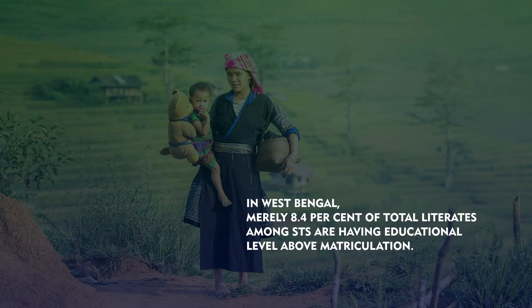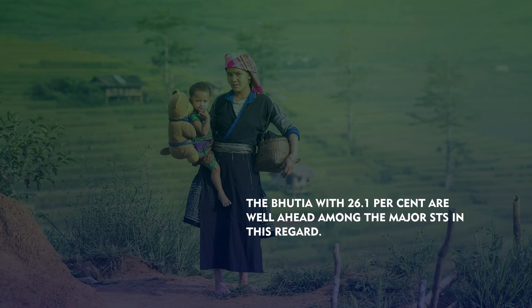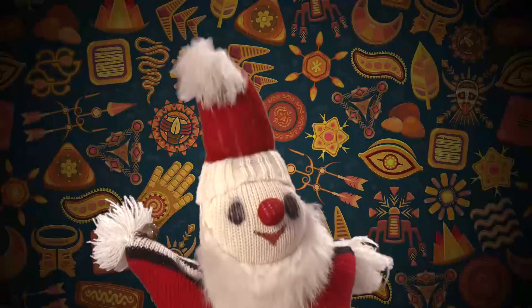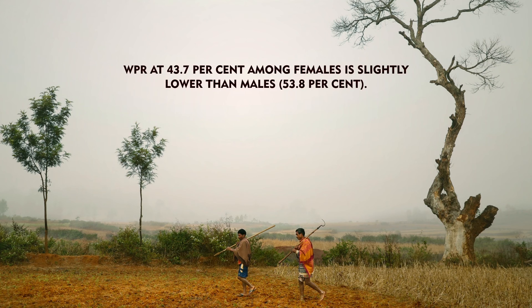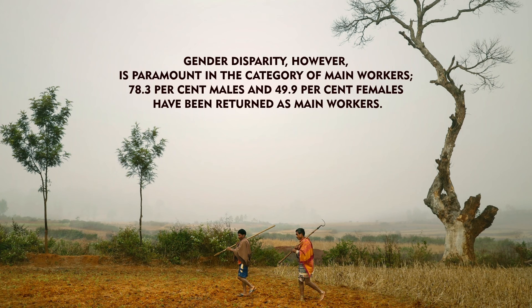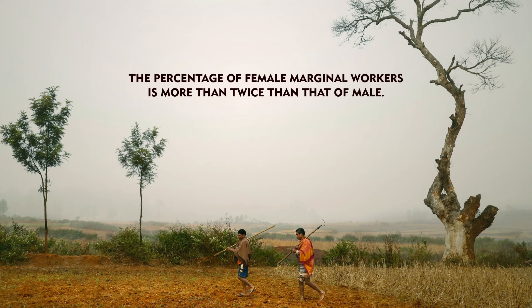In West Bengal, merely 8.4 percent of total literates among STs are having educational level above matriculation. The Bhutia with 26.1 percent are well ahead among the major STs in this regard. Work participation rate: In the 2011 census, 47.4 percent of the ST population has been recorded as workers, which is close to the aggregated national average of STs 53.9 percent. Of the total workers, 57.9 percent has been returned as main workers and 42.1 percent as marginal workers. WPR stands at 43.7 percent among females, which is slightly lower than males. Gender disparity however is paramount in the category of main workers. 78.3 percent males and 49.9 percent females have been returned as main workers.